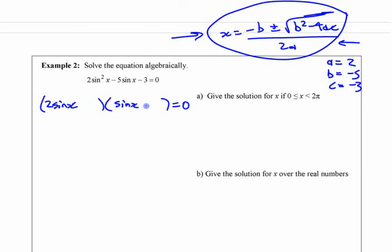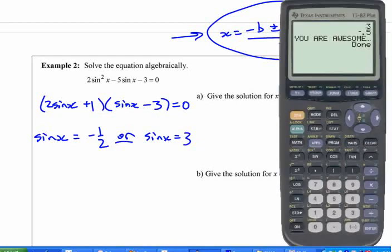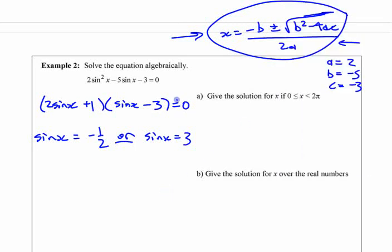Either way here, I think we end up with this. We end up with sin x equals negative 1 half or sin x equals 3. Realize that if you're using the calculator program, it's going to give you the solutions, not the factors. 3 and negative 5, they're not the numbers that go in here. They're the actual values here. And realize that it's sin x, not x.